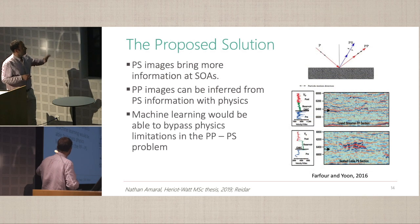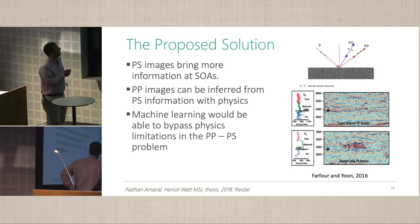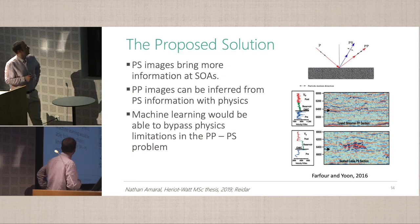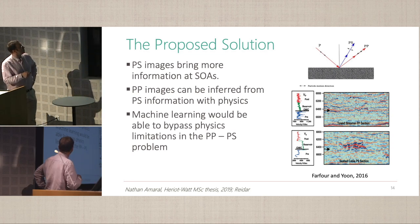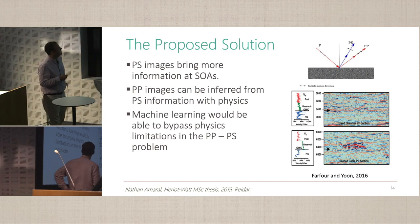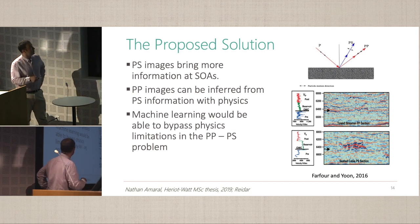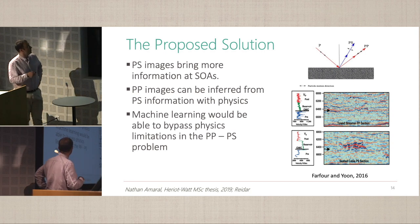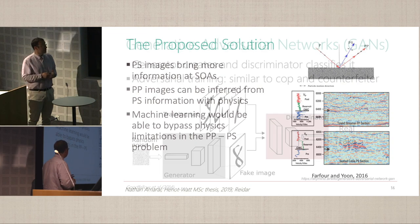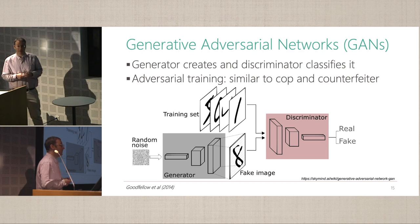The challenge we tried to tackle was to reconstruct PP images from the PS, which is much better quality. We used generative networks for that.